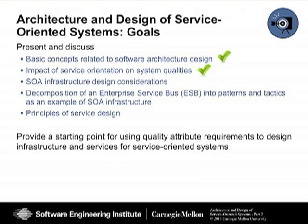The goals for this tutorial, as I presented last time, were first to discuss basic concepts related to software architecture design, which we covered in Part 1. Then we talked about the impact of service orientation on system qualities. Today we're going to focus on SOA infrastructure design considerations, specifically the enterprise service bus — what that means from a patterns and tactics perspective — as it is the main example of what a SOA infrastructure is. After covering infrastructure, we'll discuss principles of service design. The end goal is to provide a starting point for how to use quality attribute requirements as you design and architect infrastructure and services in service-oriented systems.